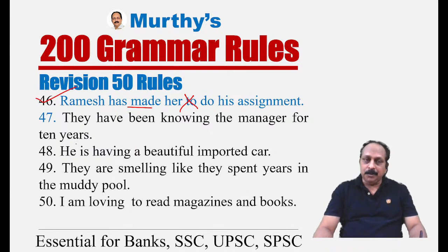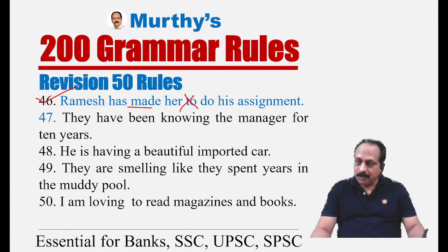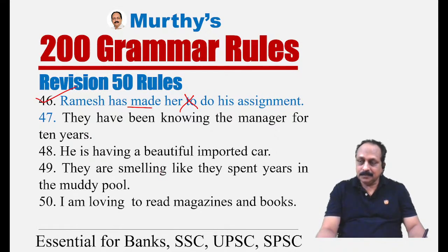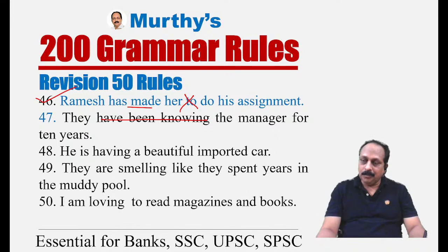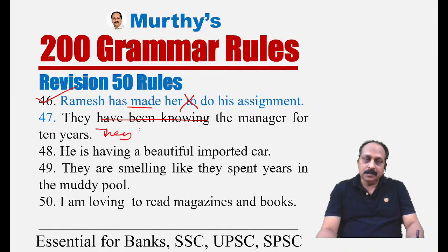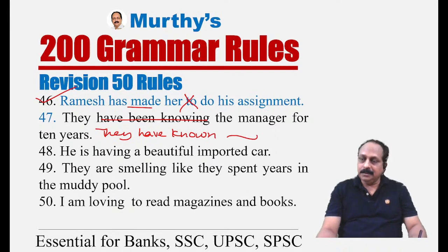Sentence forty-seven: 'They have been knowing the manager for 10 years.' 'Know' is a stative verb that cannot be used in ING form. 'Have been knowing' is incorrect. The correct tense here is present perfect: 'They have known the manager for 10 years.' 'Have known' is present perfect tense.